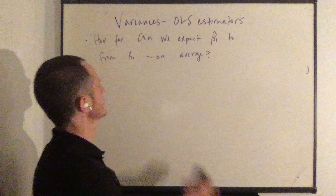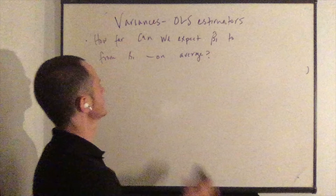The variance of β̂₁ is equal to σ² over the sum from i equals 1 to n of (xᵢ − x̄)², which is just equal to σ² over SST_X.